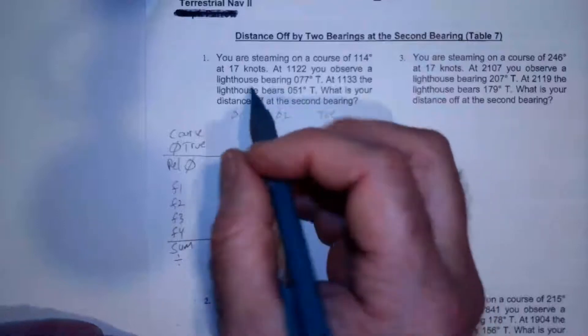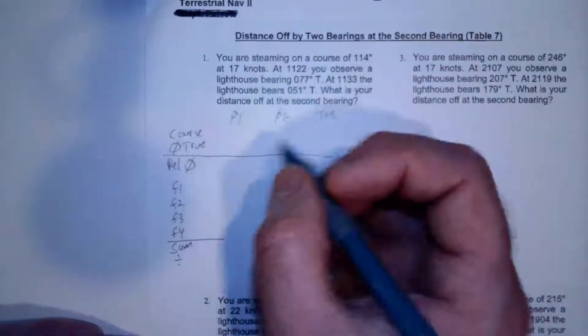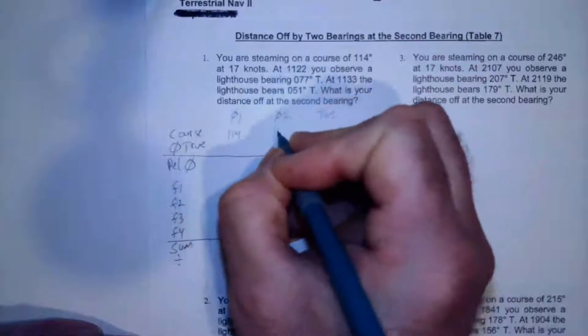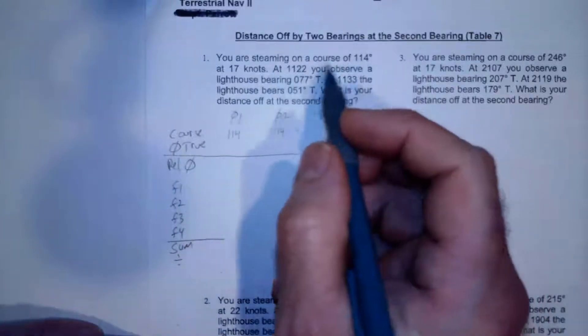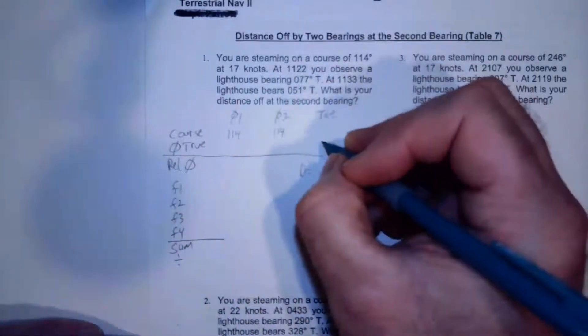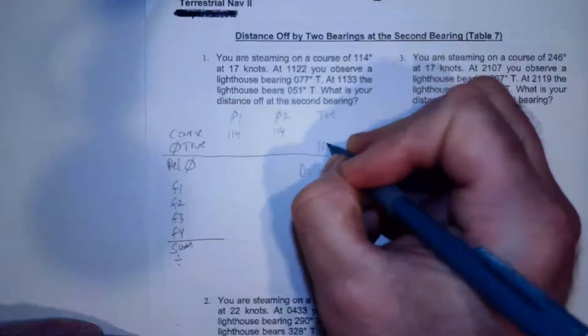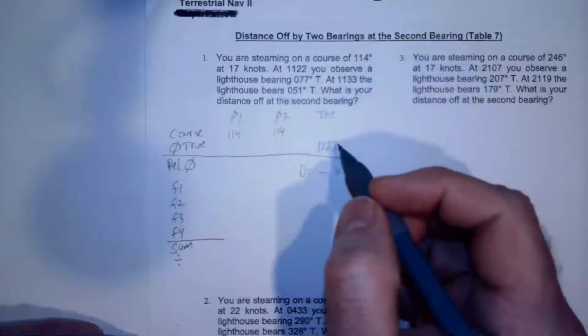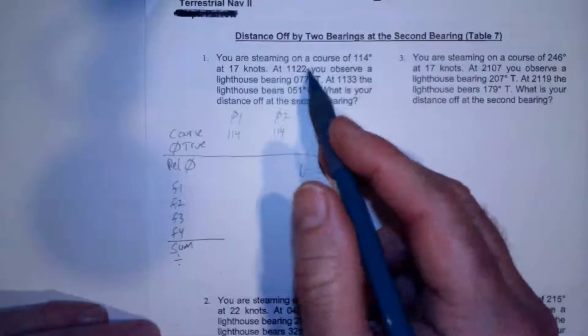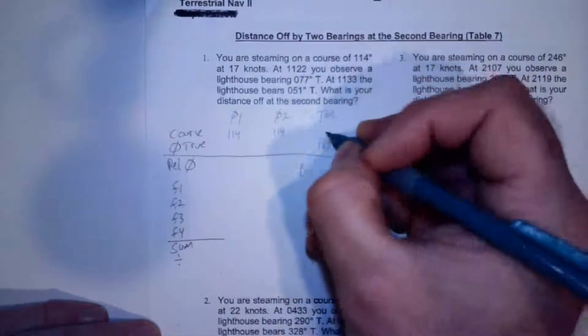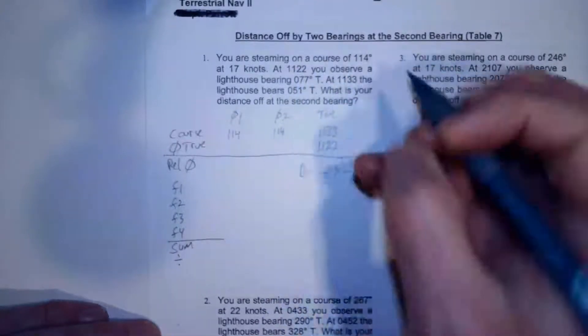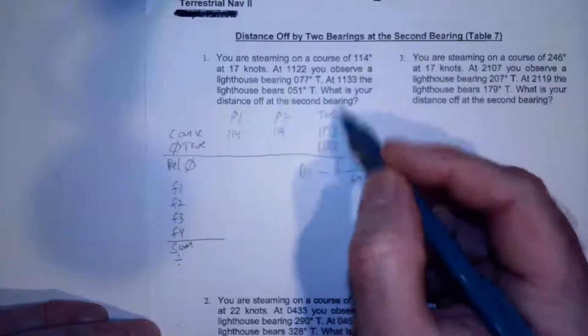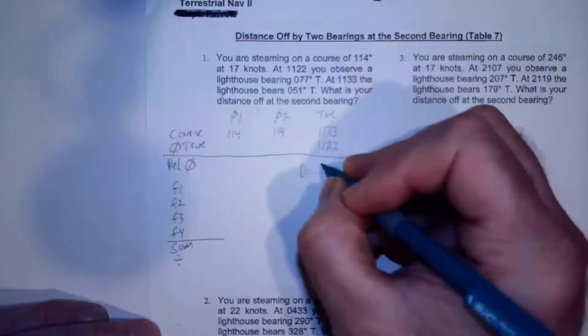You're steaming on a course of 114, so I go 114, 114. And at 1122, that's my second time, so I'm going to put it down lower, because the next number is going to be later, so I'll put it up at the top, 1133. It just makes the math a little bit easier. 1122, 1133, what's the difference between those two, it's 11 minutes.